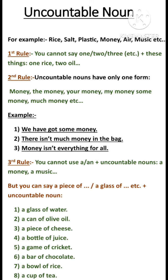Rule number 3: You cannot use 'a' or 'an' with uncountable nouns, like 'a money' or 'a music.' But you can say 'a piece of,' 'a glass of,' etc. with uncountable nouns.